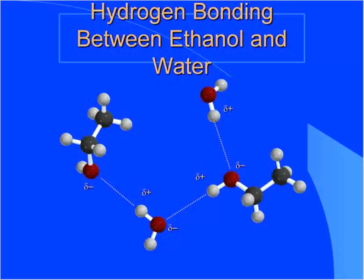Ethanol, with just two carbons, shows very nice hydrogen bonding: CH3-CH2-OH interacting O-H...O-H...O-H with water molecules, forming the hydrogen-bonded network that accounts for its full miscibility with water.